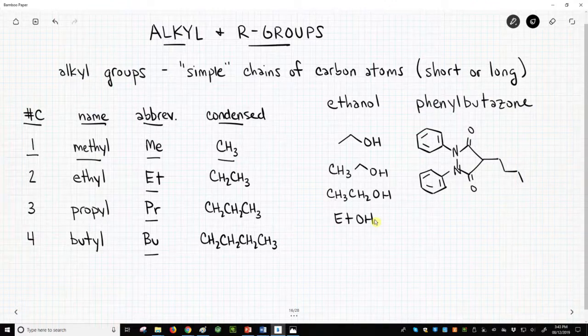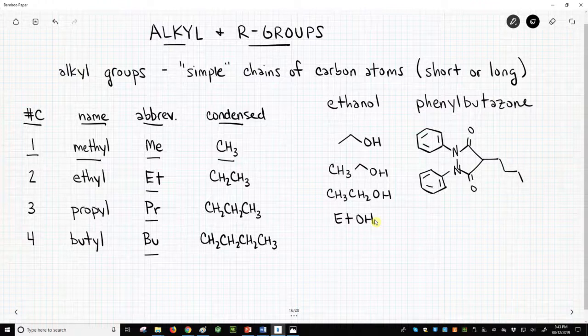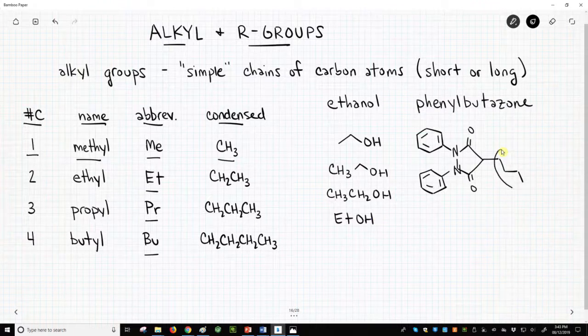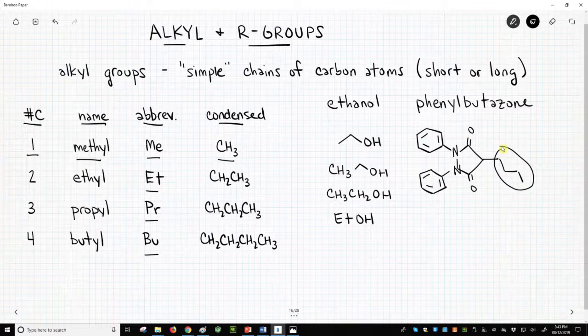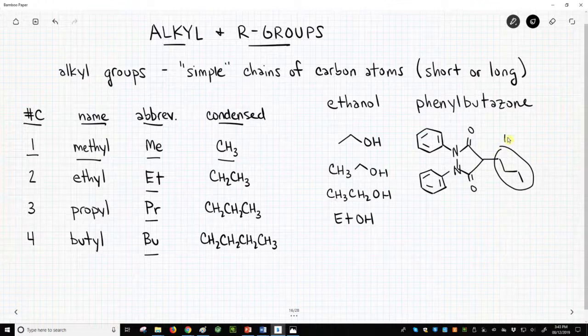The next molecule is phenylbutazone, a veterinary anti-inflammatory drug that is also called bute. Phenylbutazone contains a 4-carbon chain. This is a butyl group. We could redraw the structure with the BU abbreviation instead.